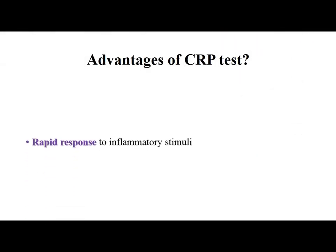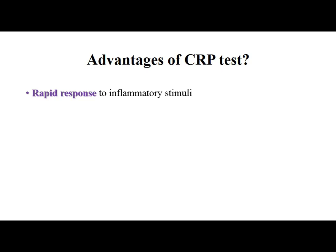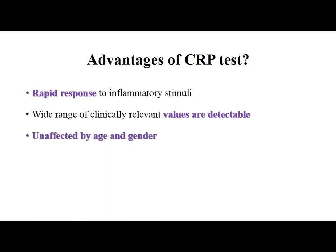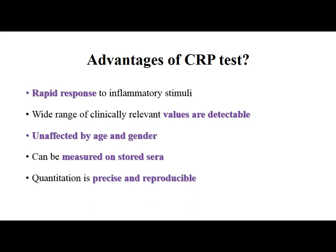The advantages of the CRP test include: CRP values rapidly increase in response to inflammatory stimuli, rising 50 to 100 times following inflammation. A wide range of clinically relevant values are detectable. The values are unaffected by age and gender, and CRP estimation can be done on stored sera. The quantitation is precise and reproducible.